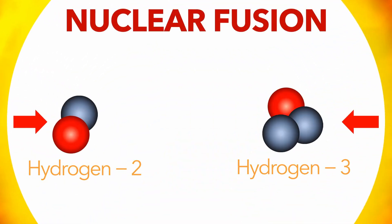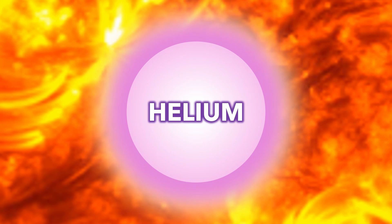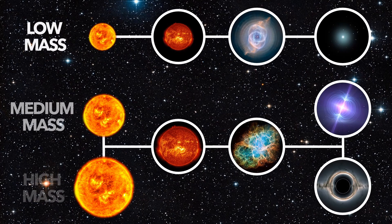Stars make energy by fusing hydrogen into helium, but once all the hydrogen is used up, the star's death begins. There are three ways a star can die, depending on its mass.